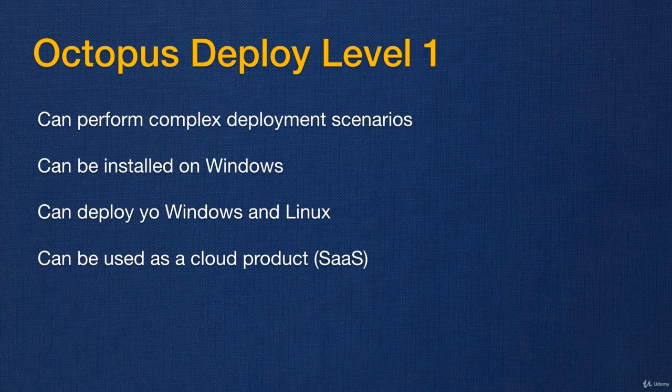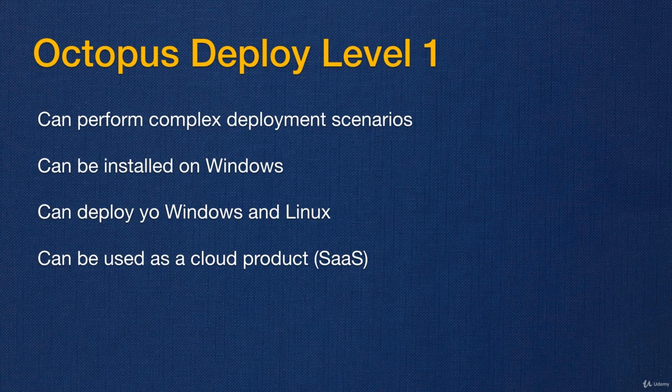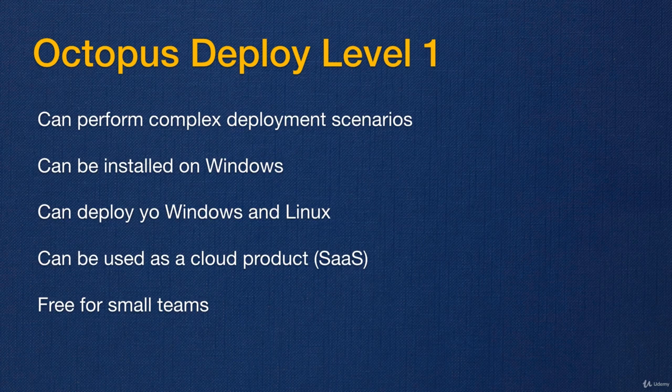You also have the option of using the cloud version of Octopus Deploy, which I recommend. In my current company we use the cloud version and are very happy with it because you don't need to run a server constantly, and you don't need to worry about upgrades, backups, and things like that. Octopus Deploy also comes with a free license for small teams — if you have up to 10 deployment targets, you can use Octopus Deploy for free.